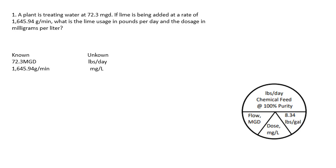These are a little bit more complicated than part 1. We'll start with our knowns and unknowns. What we know is that the flow is 72.3 million gallons a day and the dosage rate is 1,645.94 grams per minute. What we don't know is the pounds per day or the milligrams per liter. To get milligrams per liter, we're going to have to start with pounds per day.